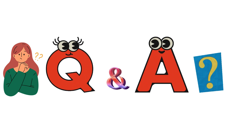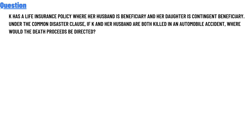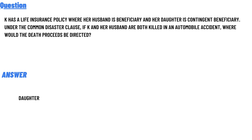Our today's question is: K has a life insurance policy where her husband is the beneficiary and her daughter is the contingent beneficiary. Under the common disaster clause, if K and her husband are both killed in an automobile accident, where would the death proceeds be directed? The correct answer to the question is: the daughter.